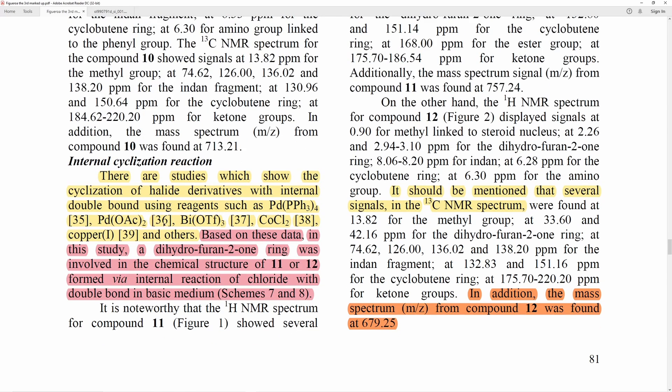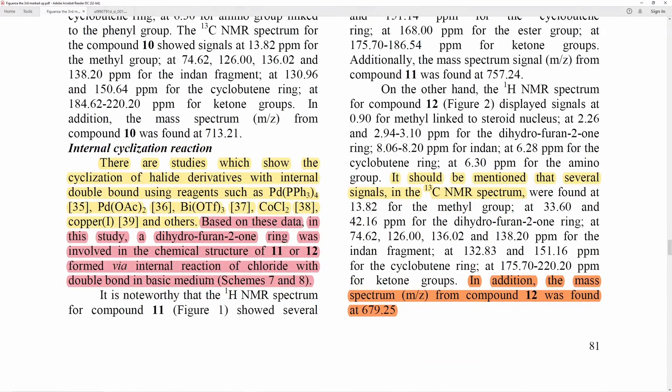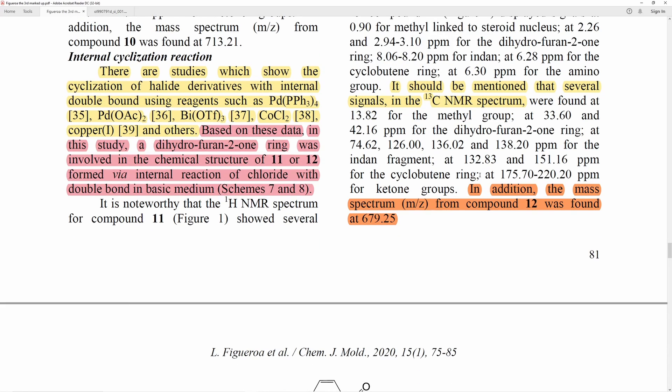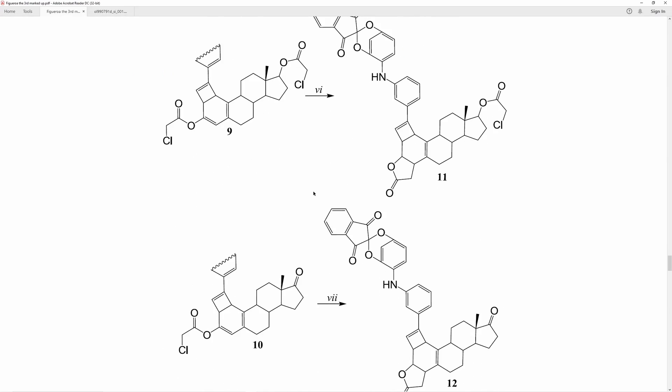The mass spectrum signal, that's kind of concerning. Here he says, there are studies which show the cyclization of halide derivatives with internal double bond. So this is just talking about palladium-mediated cyclization, and he's got conditions for alternative ones. Based on these data, in this study, a dihydrofuran-2-one ring was involved in the chemical structure of 11 or 12. Formed via internal reaction of chloride with double bond in a basic medium. Now, none of these are basic conditions. So where is he getting these conditions from? Now, it gets worse. Like, I'm just going to tease you for a minute and not show you that reaction yet, but that reaction is one of the worst Figueroa sins in this whole paper.